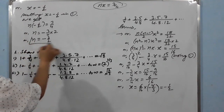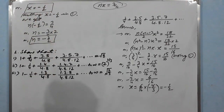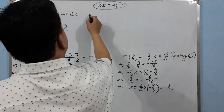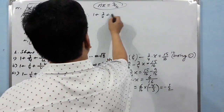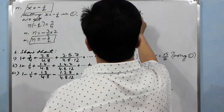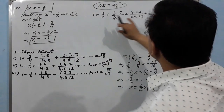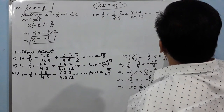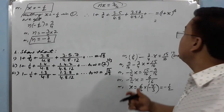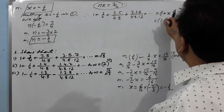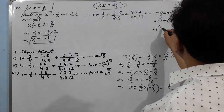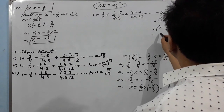Almost done. Therefore, 1 + 3/4 + (3·5)/(4·8) + (3·5·7)/(4·8·12) + ... = (1 + x)^n. Using the binomial series we found x = −1/2 and n = −3/2. Substituting: (1 + (−1/2))^(−3/2) = (1/2)^(−3/2).